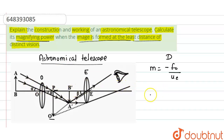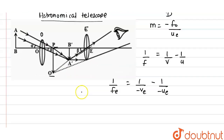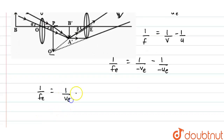We apply the lens law for the eyepiece lens: 1/f = 1/v − 1/u. For the eyepiece, this gives 1/fe = 1/(−ve) − 1/(−ue). Since both ue and ve are on the left side of the lens, their distances are negative. Simplifying, we get: 1/fe = −1/ve + 1/ue, so 1/ue = 1/fe + 1/ve.